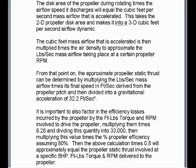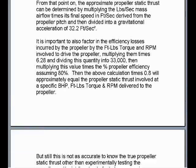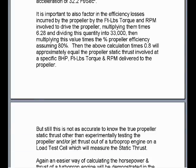The cubic feet mass airflow that is accelerated is then multiplied times the air density to approximate the pounds per second mass airflow at a certain propeller RPM. The approximate propeller static thrust is determined by multiplying the pounds per second mass airflow times its final speed in feet per second derived from the propeller pitch, then dividing by gravitational acceleration of 32.2 feet per second squared. Efficiency losses are factored in by multiplying foot-pounds torque and RPM times 6.28, dividing this quantity by 33,000, then multiplying by the propeller efficiency — assuming 80%, so multiplying the above calculation times 0.8.